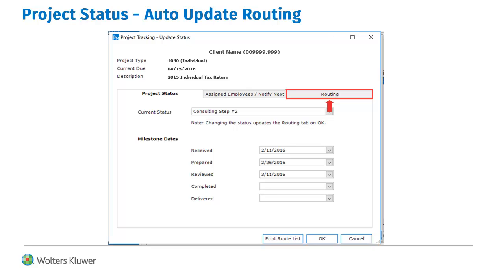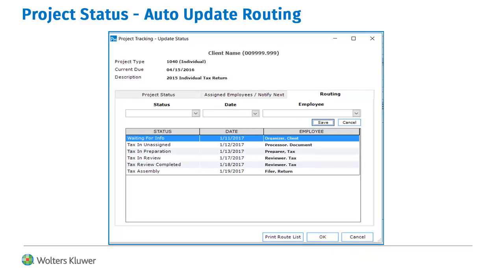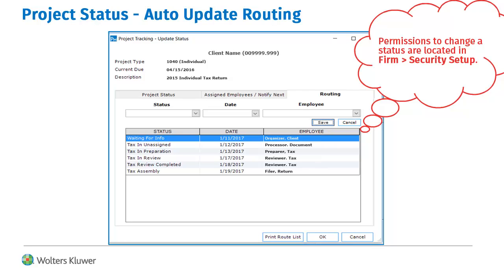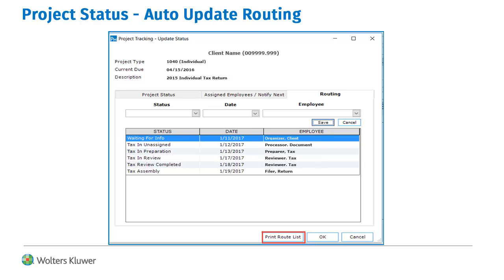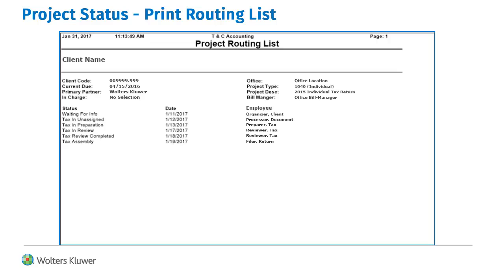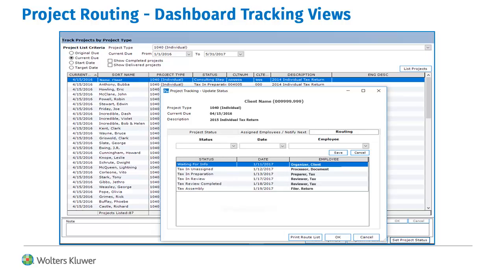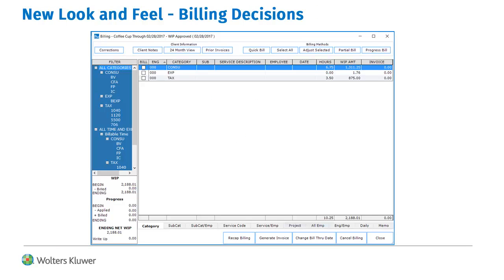As a user changes the status, the routing tab will update automatically when the user clicks the OK button. A user who has permissions to change the project status may also manually edit the routing information in the grid. The Print Route List button provides the user the ability to print the routing information for the project selected. On the Project Tracking Dashboard, users can click Set Project Status on any project row, which launches the Project Status folder where the user can click the Routing tab to see the status change, the date, and the employee who made the change.